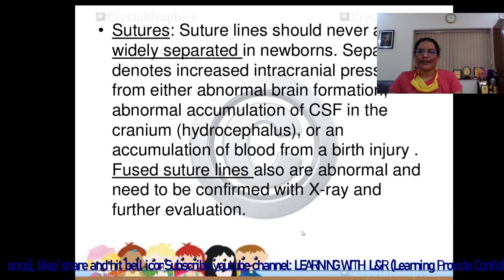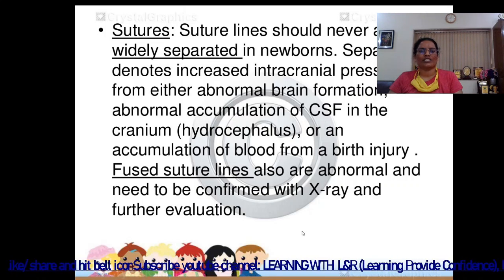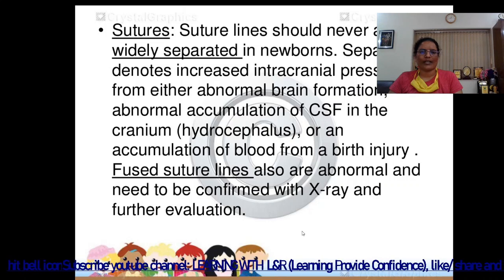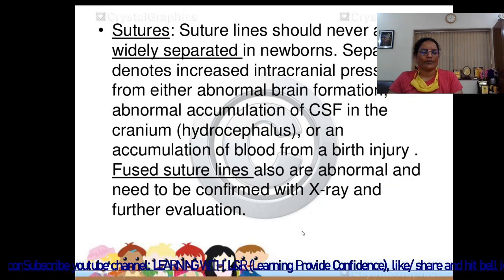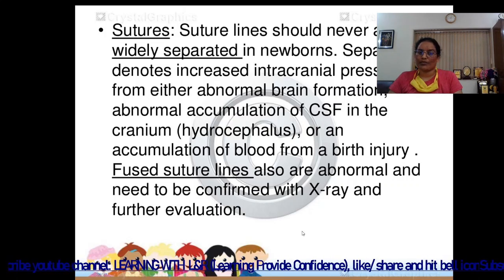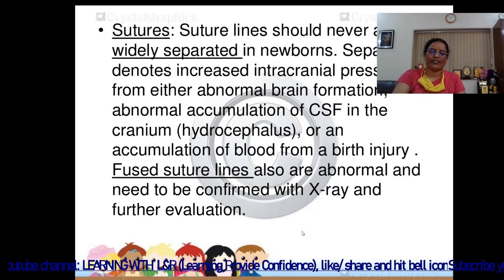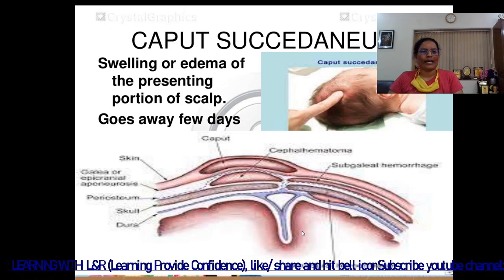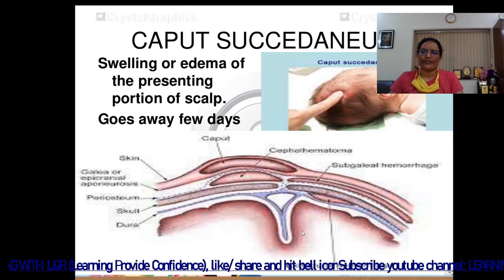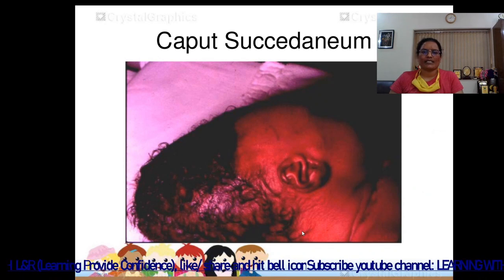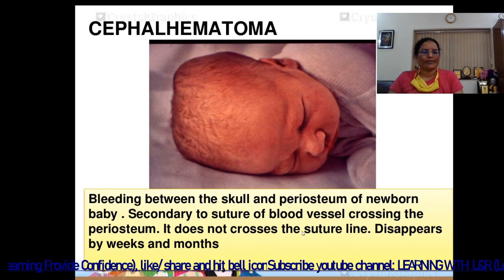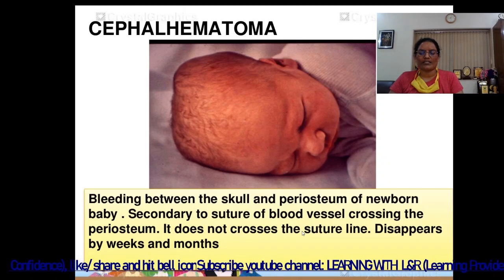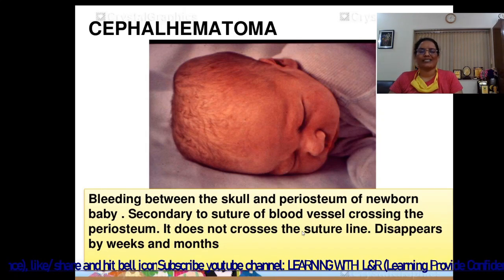Suture lines should never appear widely separated in newborns; separation denotes increased intracranial pressure from abnormal brain formation or abnormal accumulation of CSF, as in hydrocephalus, or accumulation of blood from a birth injury. Fused suture lines are also abnormal and need to be confirmed with X-ray and further evaluation. Caput succedaneum is swelling or edema of the presenting portion of the scalp that goes away within a few days. Cephalhematoma is bleeding between the skull and periosteum of the newborn, secondary to rupture of blood vessels crossing the periosteum; it does not cross the suture line and disappears over weeks to months.